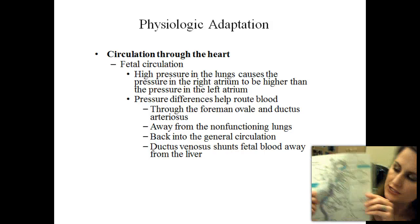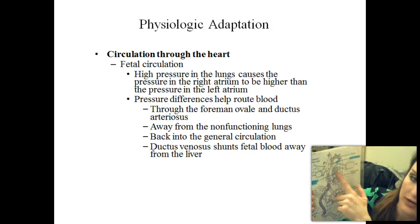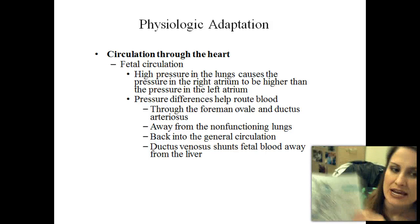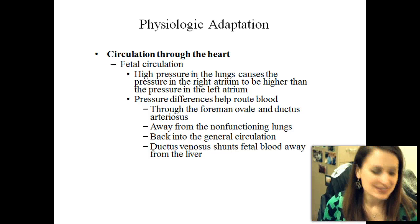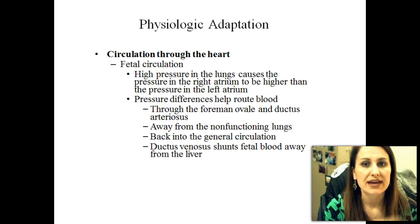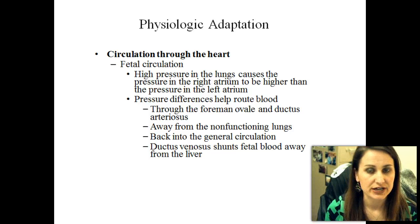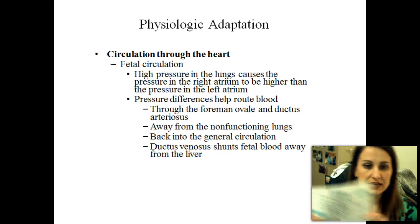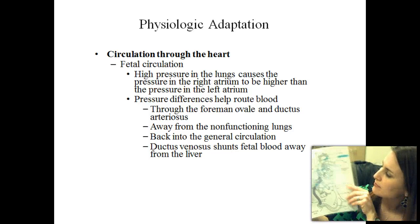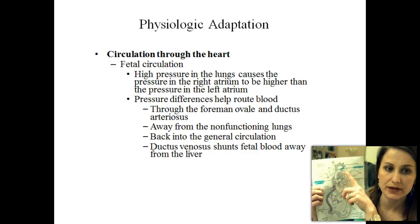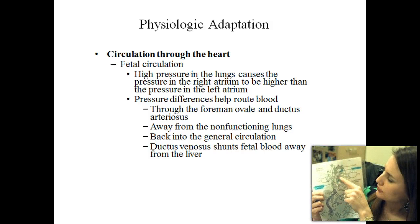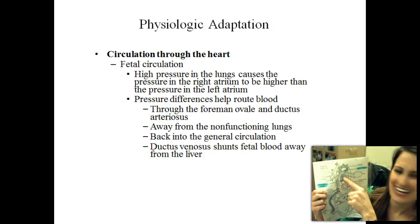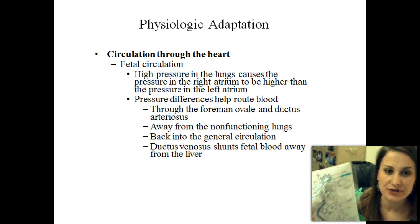That is one shunt. The second shunt is going to be the foramen ovale, and it is through the atriums. Now think about a normal heart like yours and mine — the left side has the most pressure. But for a fetus in utero, that is completely different. The right side has all the pressure. And so since the baby is not using his or her lungs, that blood doesn't have to go through to the lungs. It just goes straight through this little ductus out to the left side of the atrium, up into the aorta, and down throughout the rest of the body.